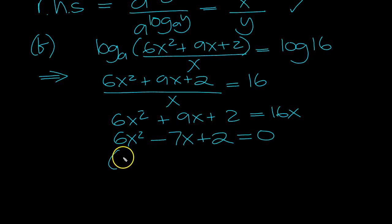3 and 2, 2 and 1. We'll make 7 with a minus and a minus. So 3x minus 2 times 2x minus 1 equals 0. So here x is equal to 2 thirds or x is equal to a half.